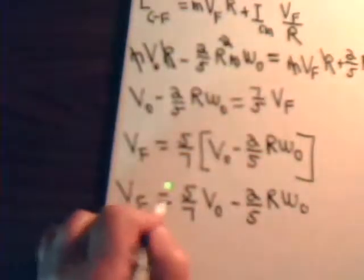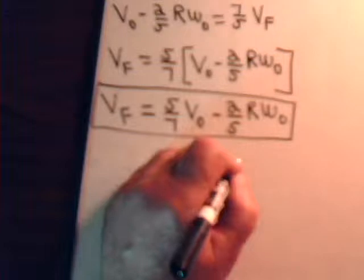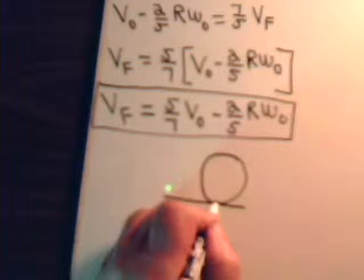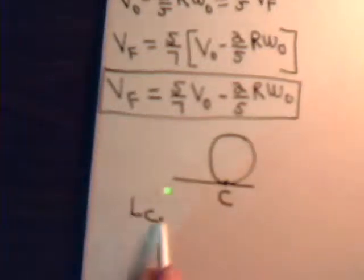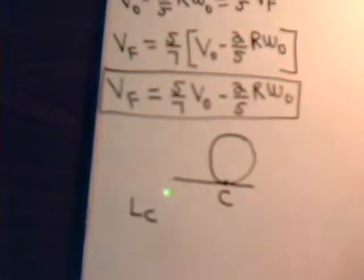That's exactly the same equation we determined in the previous video, which was video number 37, only there we used kinematics to derive the equation. Here we used conservation of angular momentum — specifically, conservation of angular momentum about the contact point C, where we derived that angular momentum about that point is conserved. So once again, we get the same expression for what the final velocity of the ball will be once it goes into pure roll.